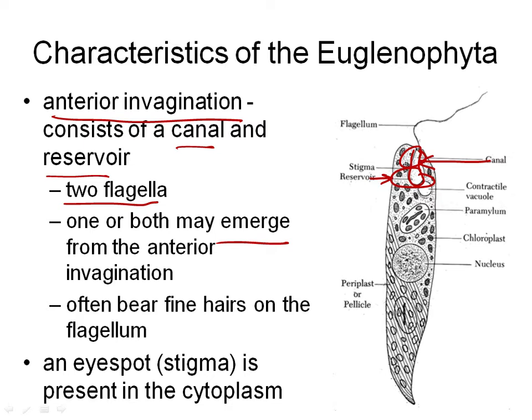The flagella have fine hairs on them — it looks a little fuzzy. If we looked at the flagellum, we would see these little hairs along it. It's called a tinsel flagellum. They're not actually hairs; the flagellum is made up of that 9-plus-2 microtubule arrangement, so these are little cytoplasmic projections off the side of the flagellum.